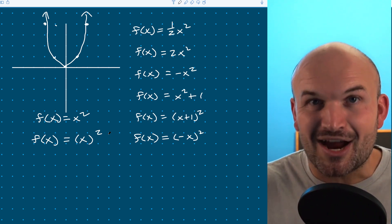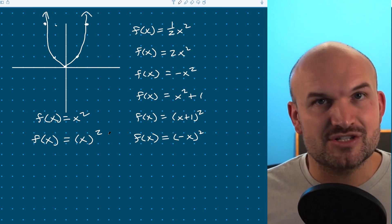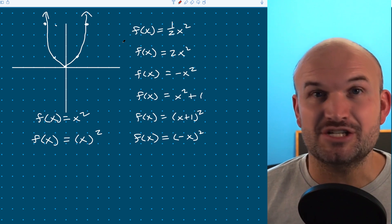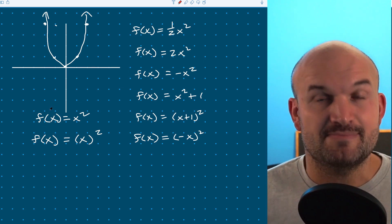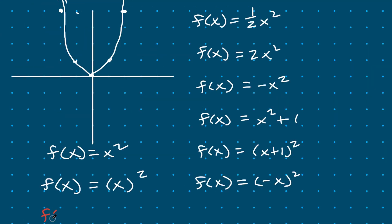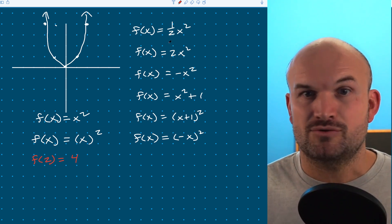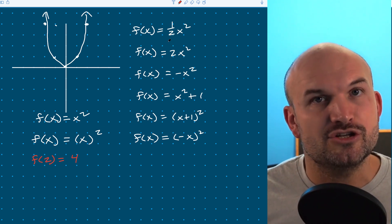Let's go back and review these transformations. I'm also going to justify them using a value of the graph — the value we're going to use is two. When we evaluate functions, I can plug two in for x and get an output. When I plug in two, I'm going to get four. In this first example, you can see that I'm multiplying by one-half outside the function — there are no parentheses, so we can assume it's outside. Also, notice that one-half is less than one.